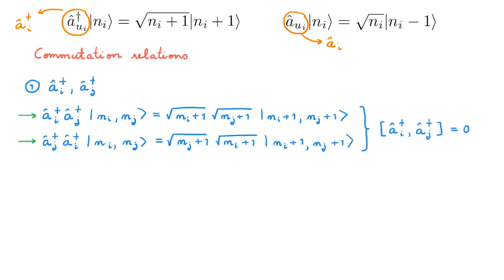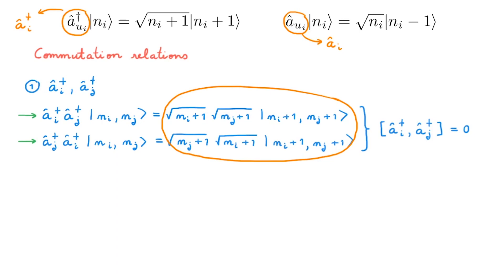In the companion video on creation and annihilation operators for fermions, we find that rather than obeying commutation relations like bosons, fermions instead obey anti-commutation relations. This difference reflects the respective symmetric and anti-symmetric nature of their states. Specifically, the vanishing commutator for bosons occurs because symmetric states don't change when we exchange any two particles. For fermions, exchanging two particles gives an extra minus sign, so we add rather than subtract equations to get the vanishing result, hence the anti-commutator.